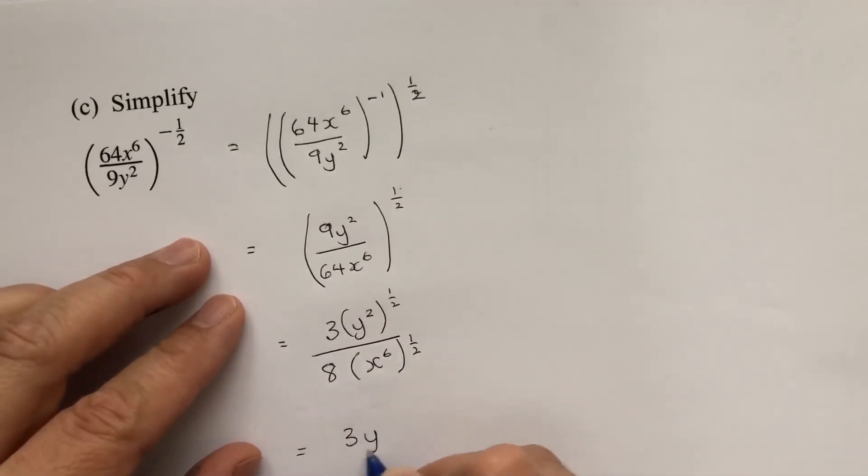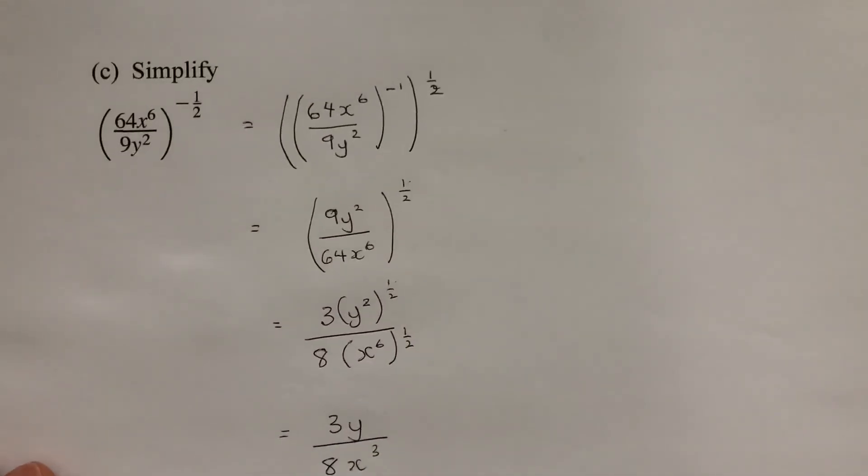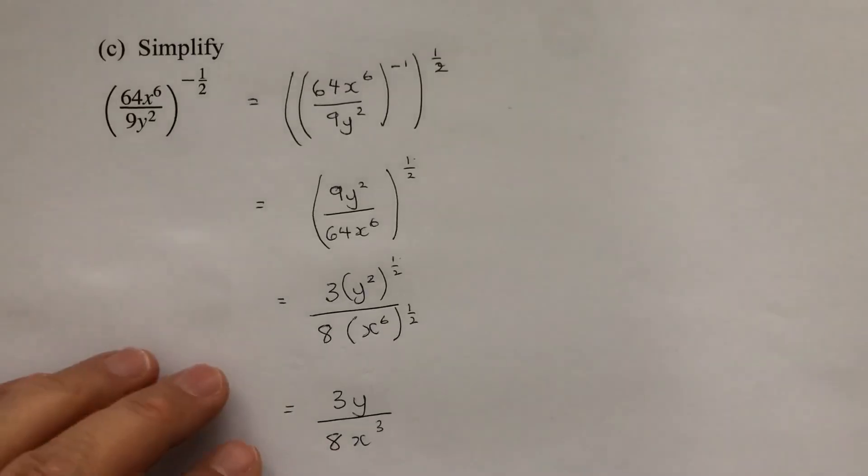So that's 3y, 2 times a half is just 1, or just y, over 8, and then 6 times a half is 3. So I'll give you that: 3y over 8x to the power of 3.